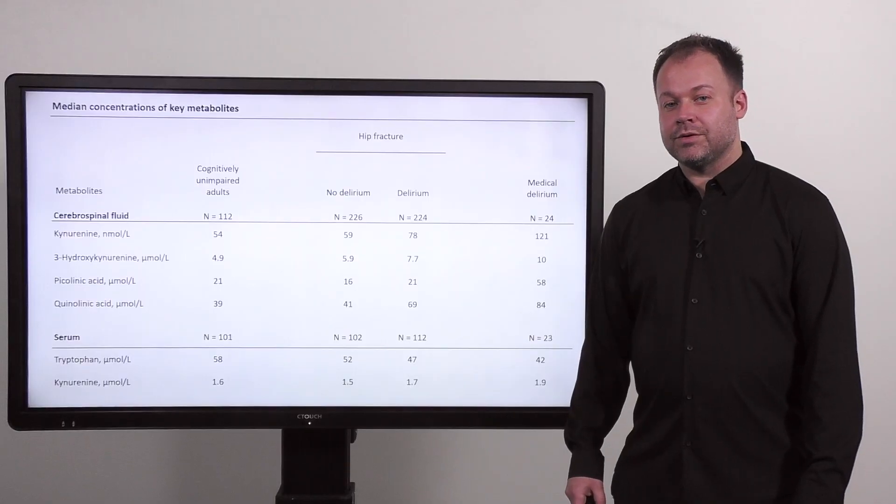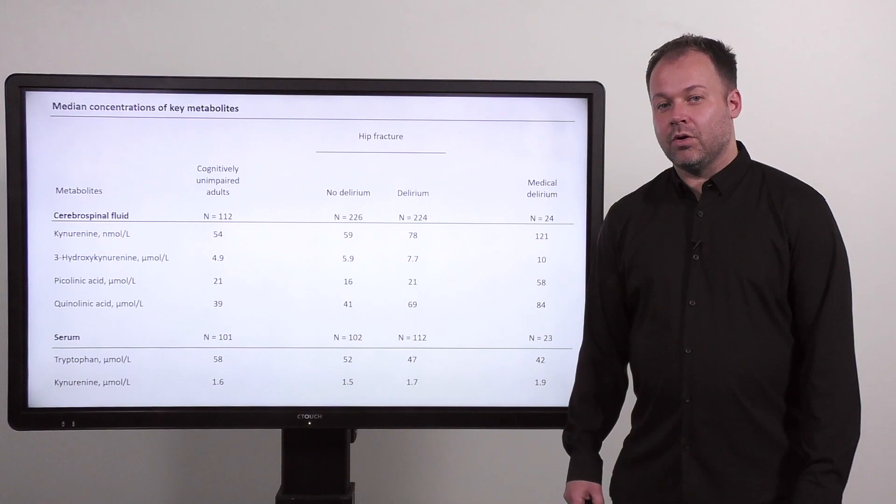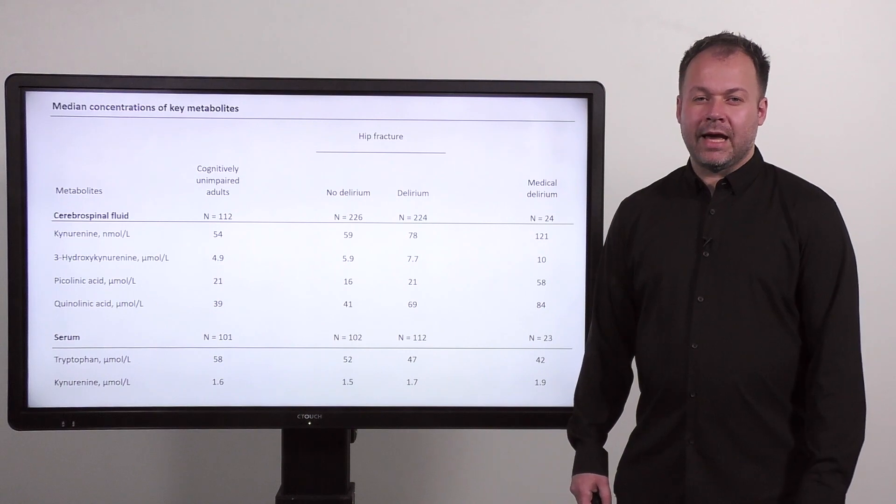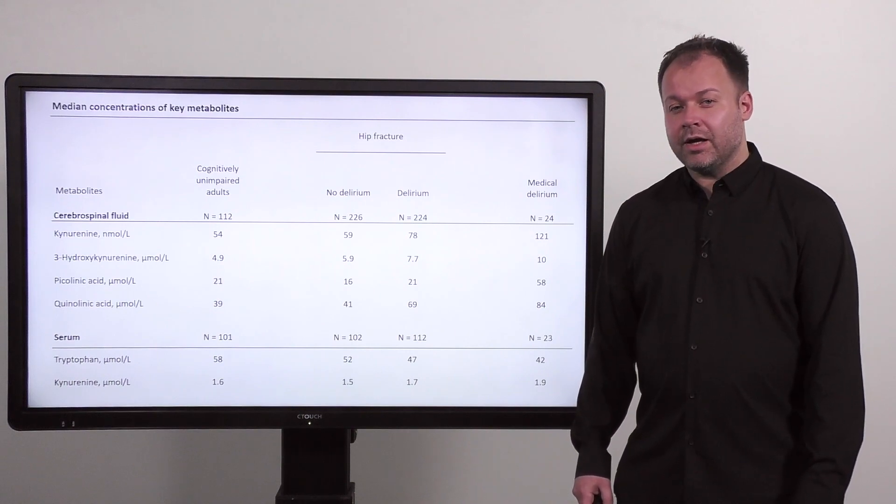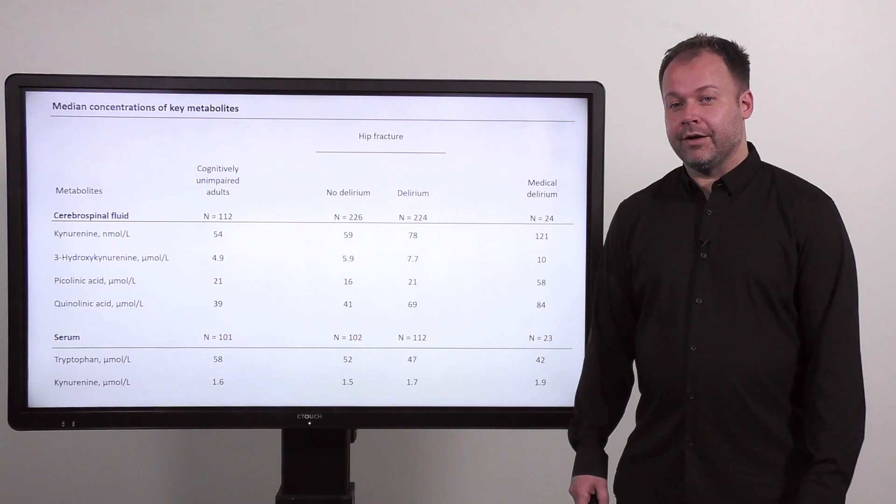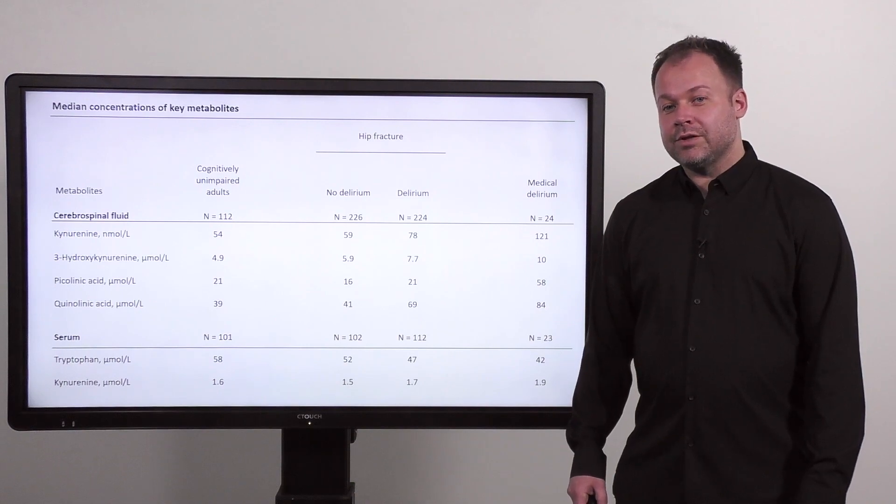Here, I would like to focus the viewers' attention on quinolinic acid and its concentration in the different cohorts. In cognitively unimpaired adults, the concentration is strikingly similar to that of patients with hip fracture and no delirium. Moving to patients with delirium and medical delirium, the concentration is almost twice as much.